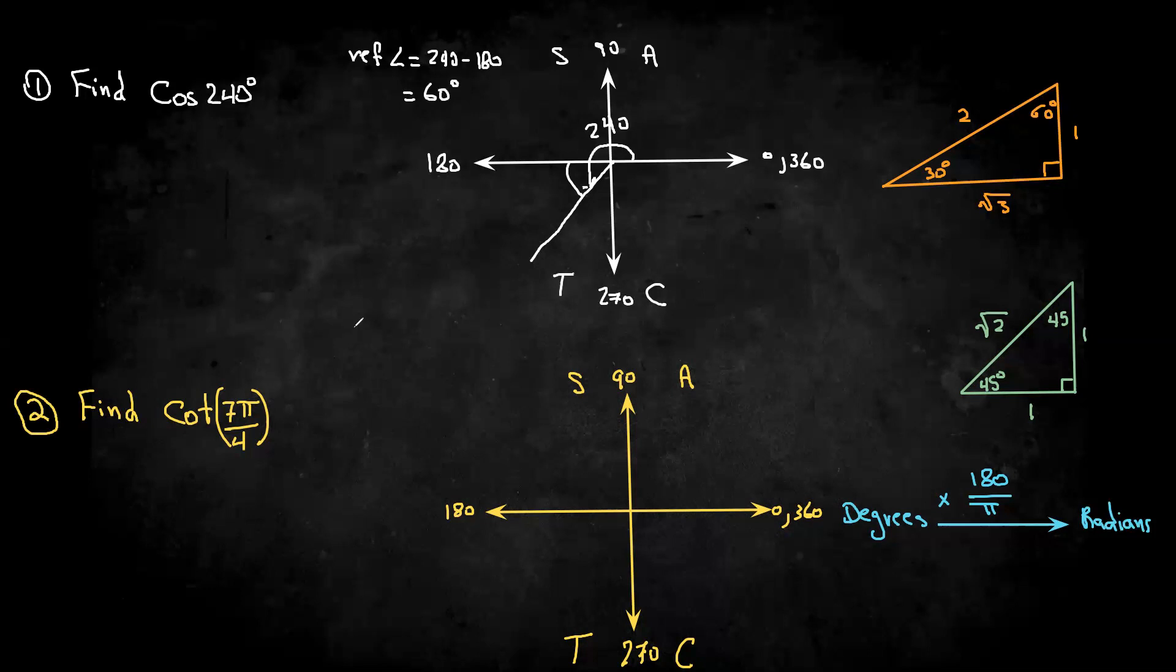So knowing that, and knowing that the angle's in the third quadrant, this is the third quadrant, and in the third quadrant, only the tangent is positive, so the cos is going to be negative, so cos 240 is going to be negative because it's in the third quadrant.